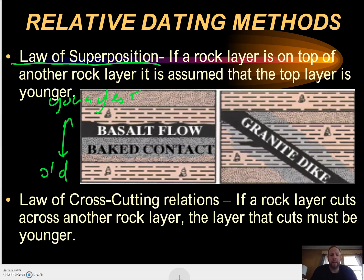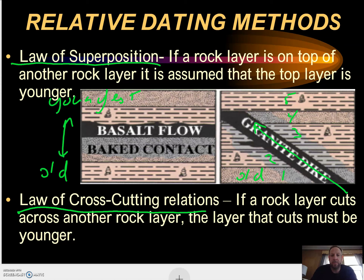There's also something called a cross-cutting relationship. When you make a sandwich, you build it: bread, condiment, sandwich meat, lettuce and tomato, cheese, and the other piece of bread on top — and then you cut it. Rock layers cut by another rock layer must be younger. So the rock layer that is cutting through — in this example, the granite dike cutting through those other layers — is the youngest.